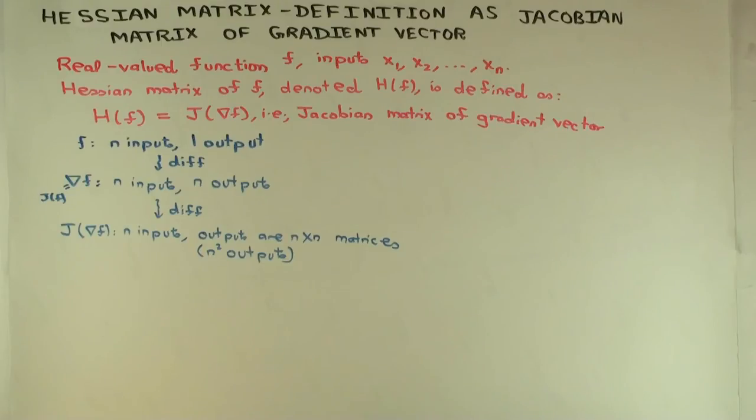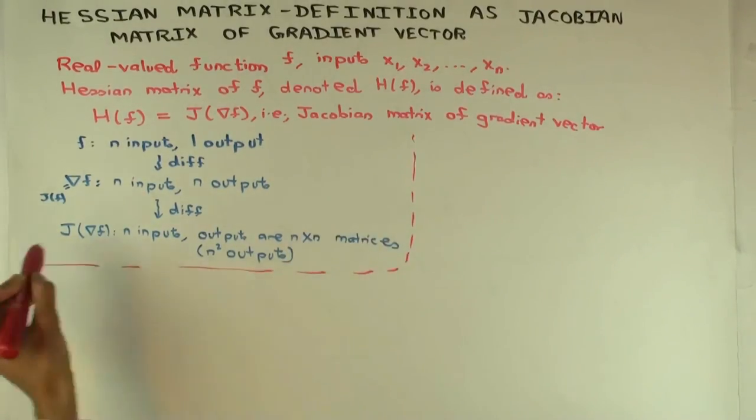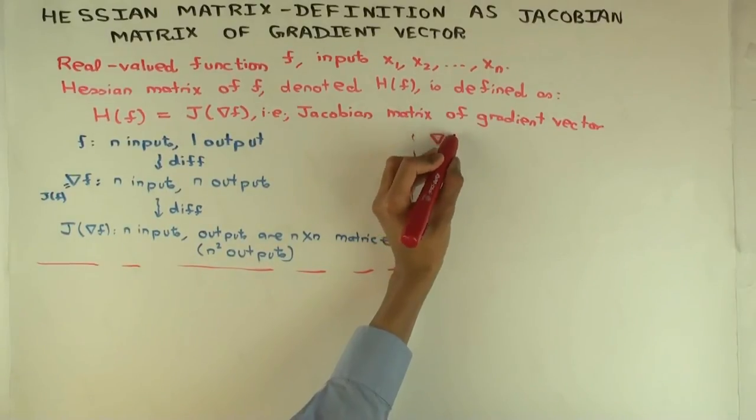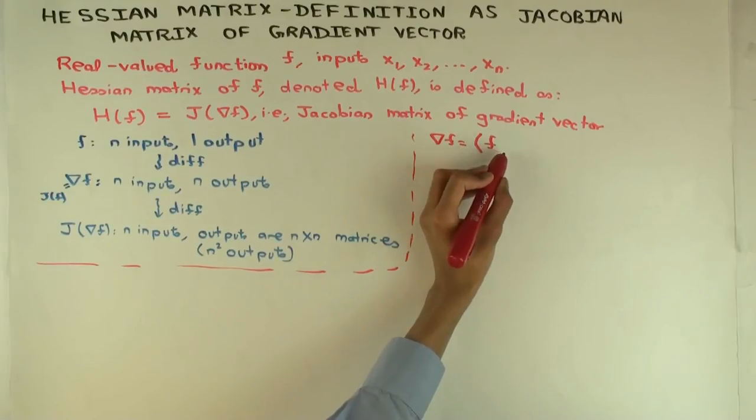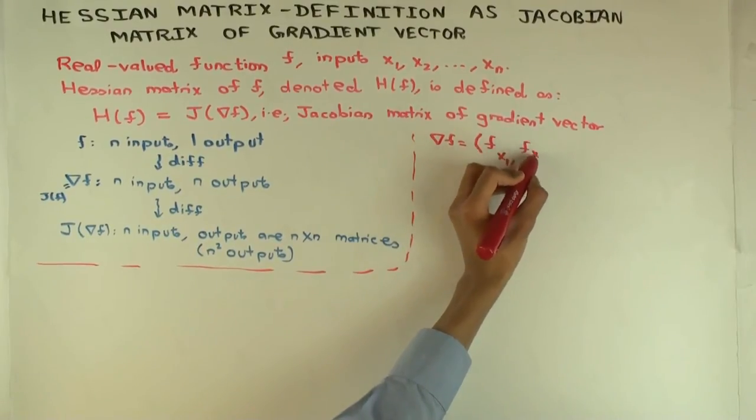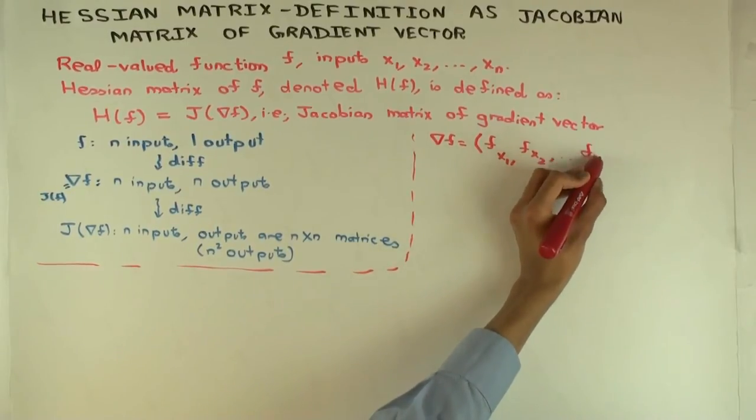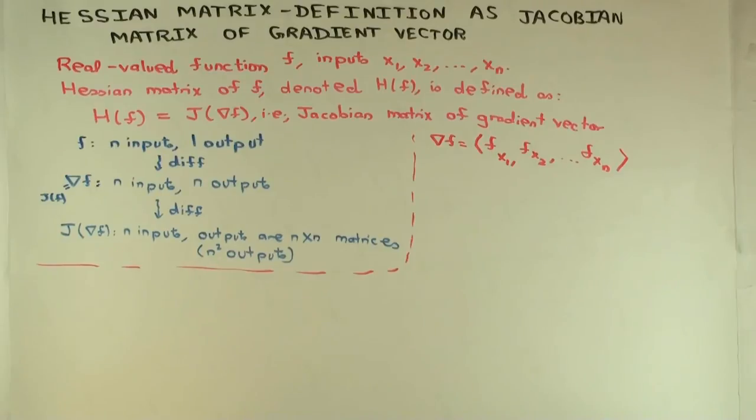So now let's try to see what this matrix will look like in practice. So what does nabla f look like? Well, what are the coordinate functions of nabla f? What does nabla f look like? It's a function with n coordinates. So nabla f is what? The coordinates are the partial derivatives. So f sub x1, f sub x2, so on till f sub xn. So far so good?